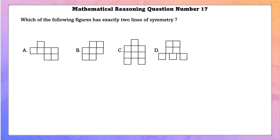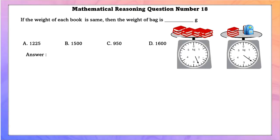Mathematical reasoning question number 17 — which of the following figures has exactly two lines of symmetry? Option B has two lines of symmetry.